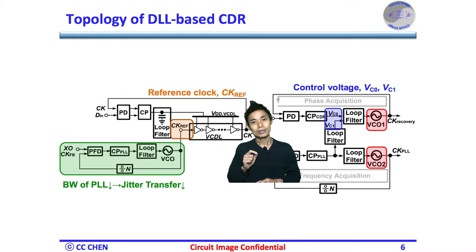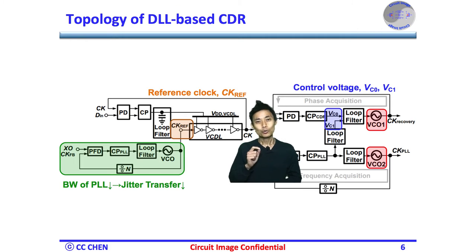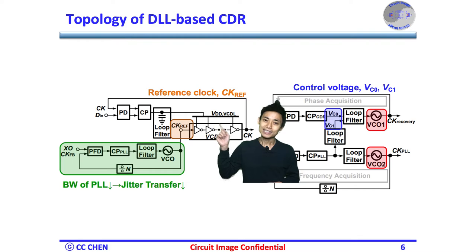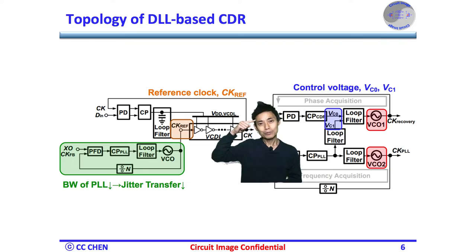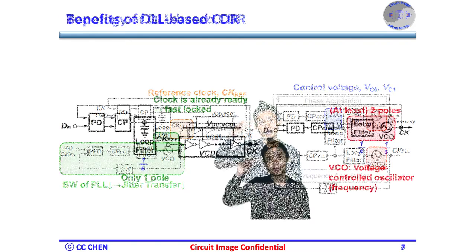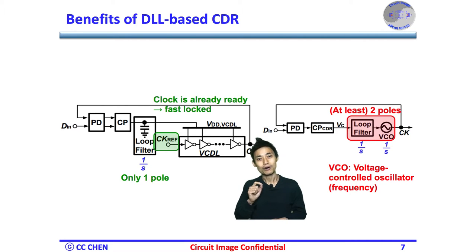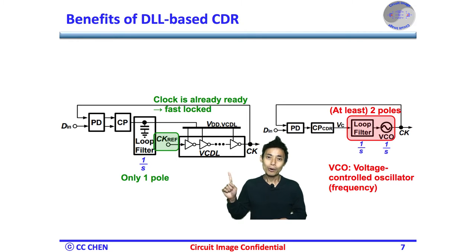The benefit of the shared PLL will provide low-pass filtering of the input reference clock jitter, which reduces the jitter transfer from its reference clock. The actual benefit of using a DLL-based CDR is that it does not have the jitter accumulation issue of a PLL-based CDR topology. Also, a DLL-based CDR provides a more stable system according to its one-pole feedback system.